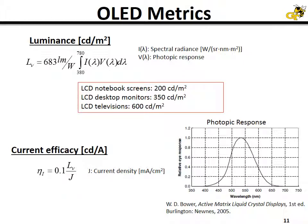Before I show my results, I'd like to explain the metrics for the data. The first is luminance, which can be thought of analogously to brightness. It's the spectral radiance integrated against the photopic response of the human eye to visible light, integrated across the visible spectrum and multiplied by 683 lumens per watt. The unit is candela per meter squared. The efficiency metric I report is called current efficacy, reported in candela per amp, which is the ratio of luminance to current density.